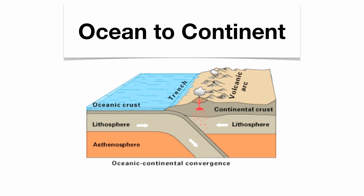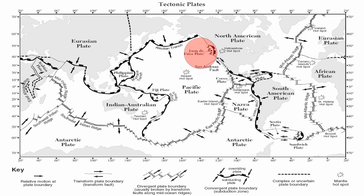Trenches tend to be some of the deepest points on the planet. In North America, a very small plate called the Juan de Fuca plate is subducting underneath North America, giving you subduction, big earthquakes, mountains, trenches, and active volcanism. You get the same features at the Cocos Plate subducting underneath North America and the Caribbean Plate. With the Nazca Plate subducting underneath South America, you have the Peru-Chile Trench — the location of the biggest earthquake ever recorded back in 1960, 9.5 on the Richter scale.